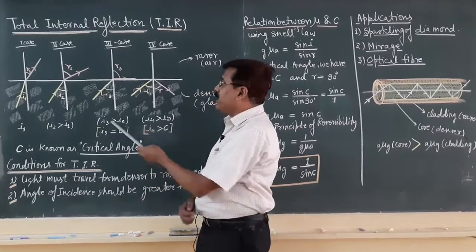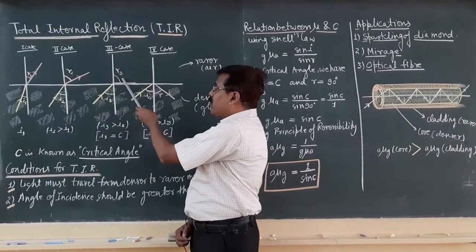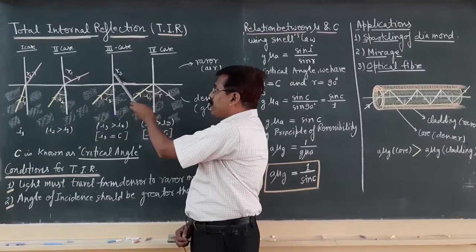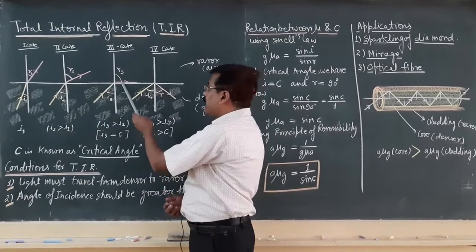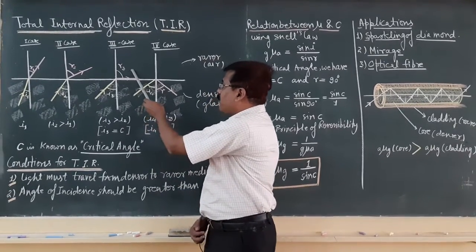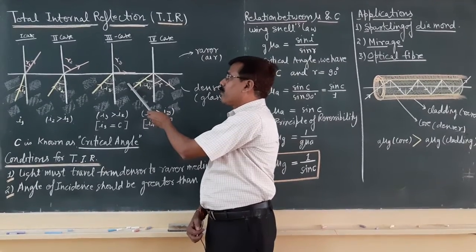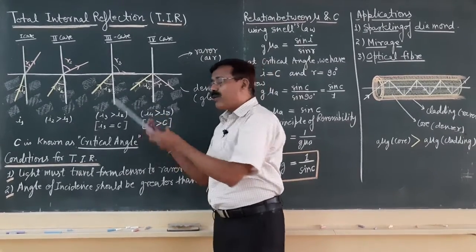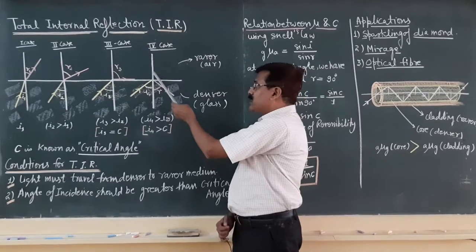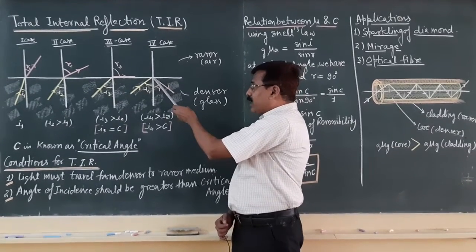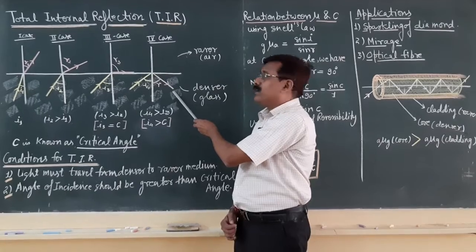If you further increase the angle of incidence, you find the angle of refraction becomes 90 degrees. It coincides with the interface of the rarer and denser medium. And if you further increase the angle of incidence, the refracted ray reflects back into the same medium.